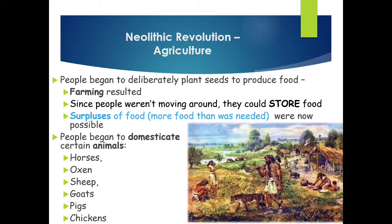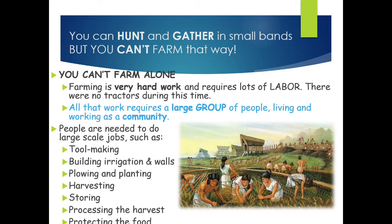Since people weren't moving around because they were farming, they could store food, and surpluses — more food than was needed — became possible. People began to domesticate certain animals: horses, oxen, sheep, goats, pigs, and chickens. You can hunt and gather in small bands, but you can't farm that way — farming is very hard work requiring lots of labor. There were no tractors. All that work requires a large group of people living and working as a community, doing large-scale jobs like tool-making, building irrigation, building walls, plowing, planting, harvesting, storing, processing the harvest, and protecting the food.